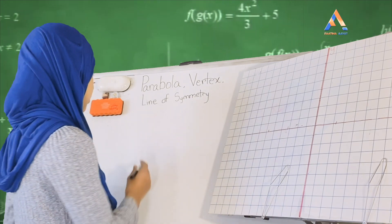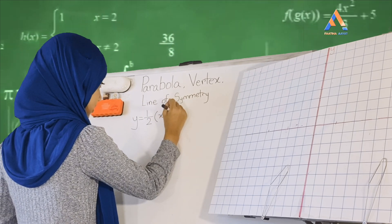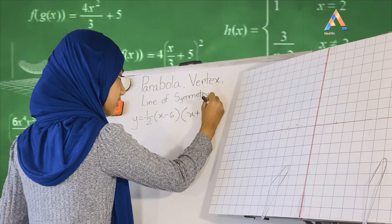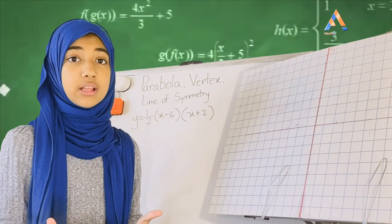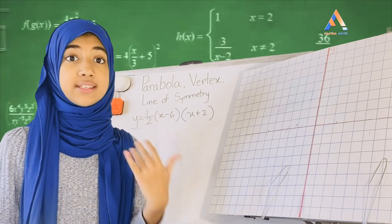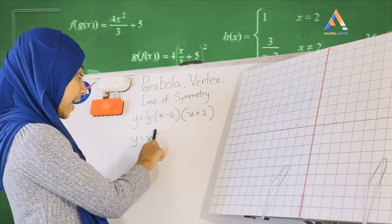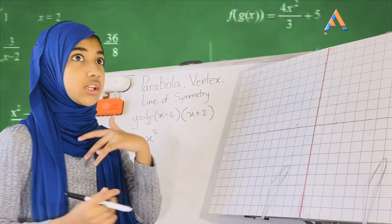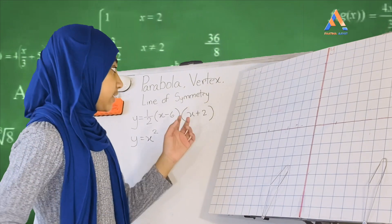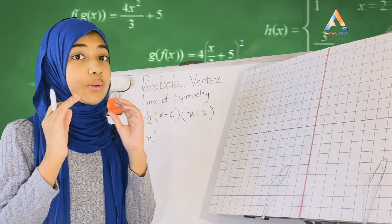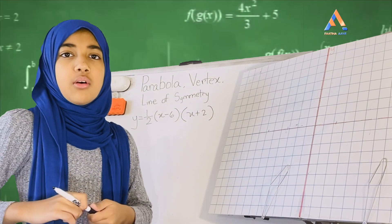So let's say my equation is y equals one-half times (x minus 6)(x plus 2). This is just an example. Now, you will understand that this is a parabola when you see a second-degree term — x squared is a second-degree term because it has a degree of two. So whenever you see a second-degree term in the equation, you know it is a parabola.